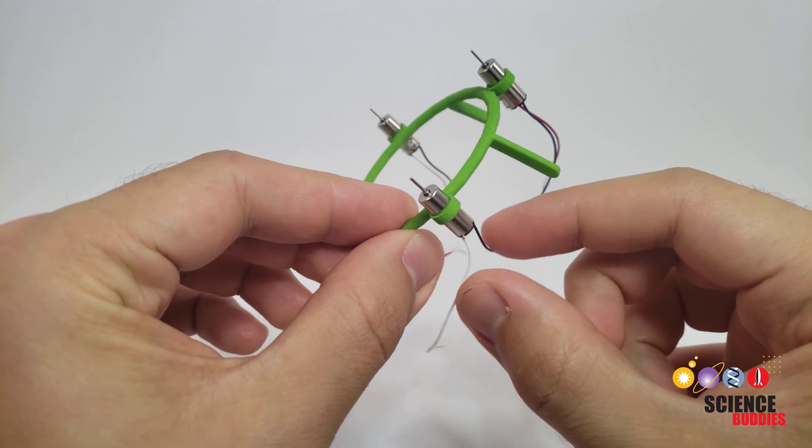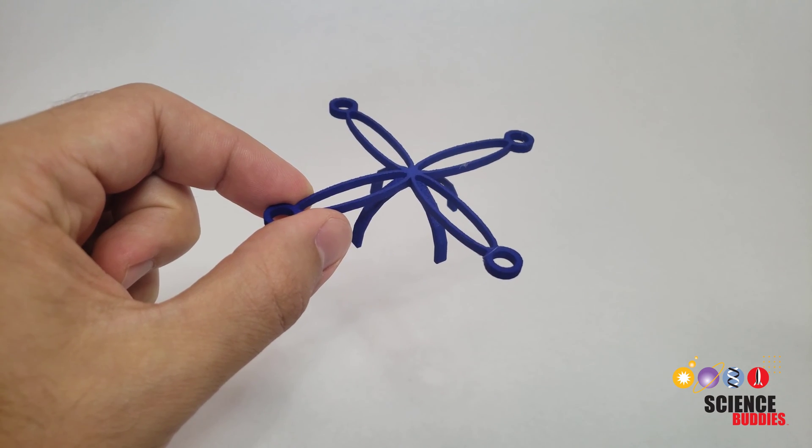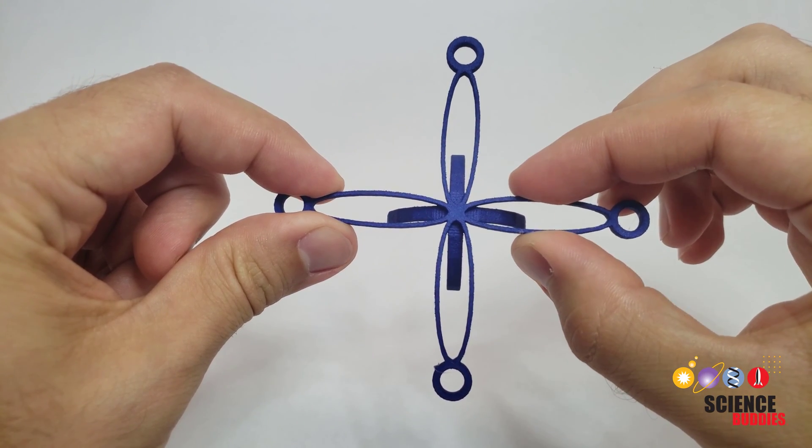You should consider how you'll attach the motors to the frame and how you'll connect their wires. You can also think about how to make the frame lighter, but be careful because parts that are too thin might bend or break easily.